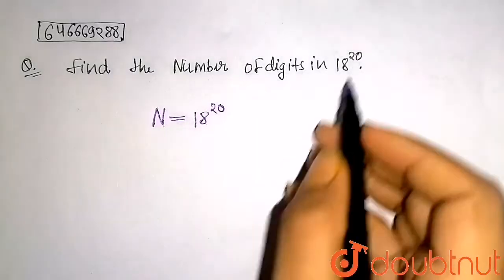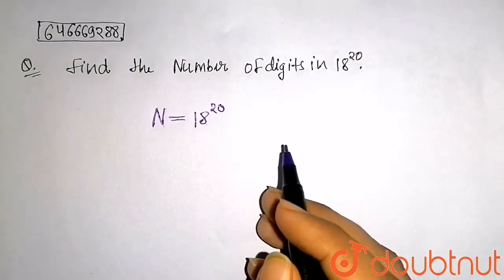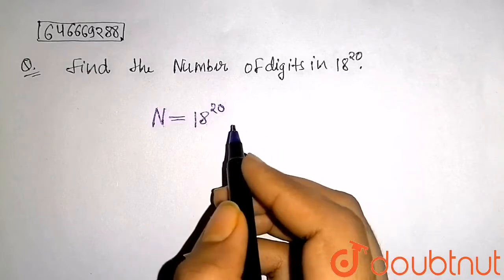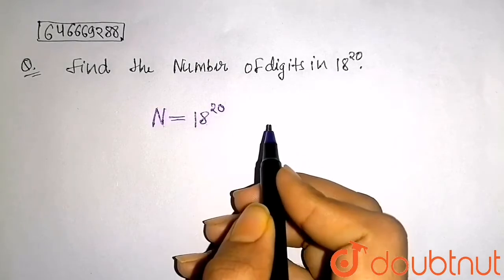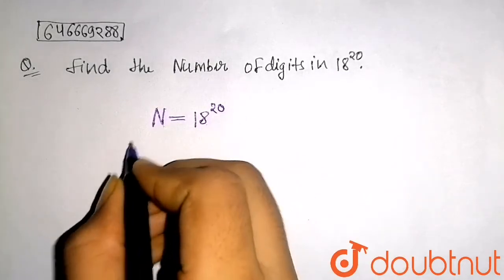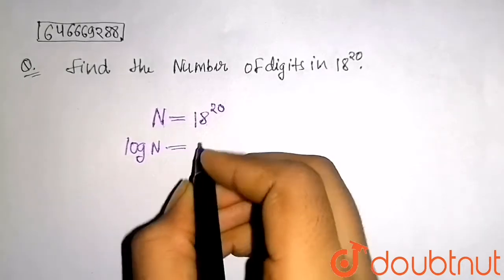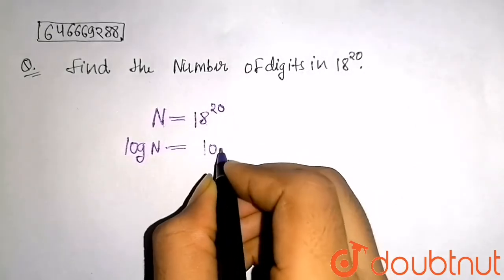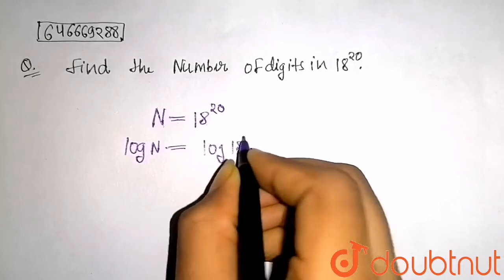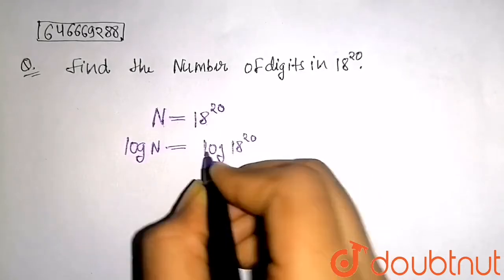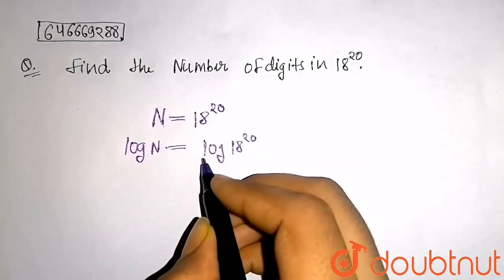So here, what I am doing is taking log both the sides. When I take log, I will get log N equals log 18^20. Now we know that whatever is in the power, that will be coming in front by the property of log.